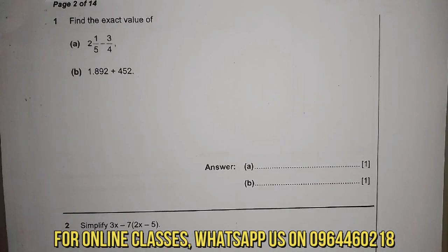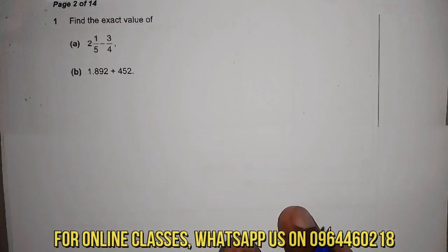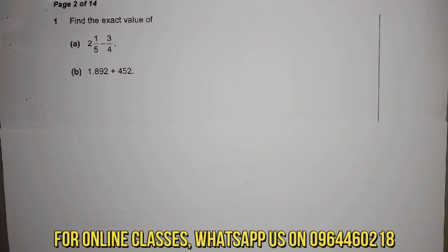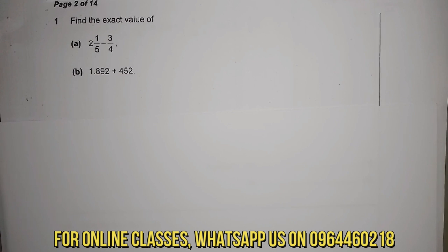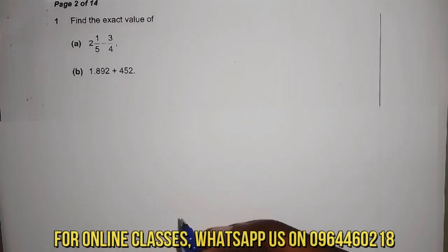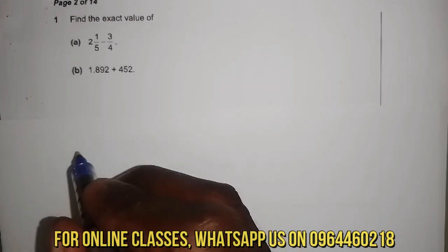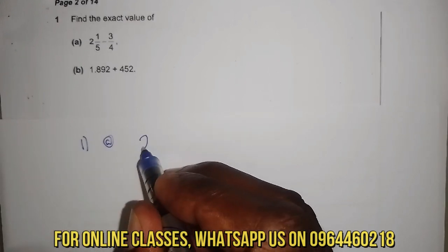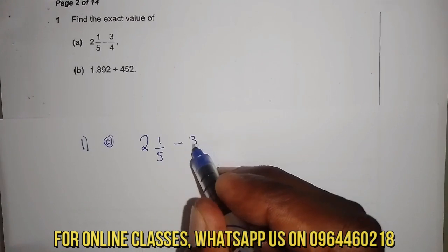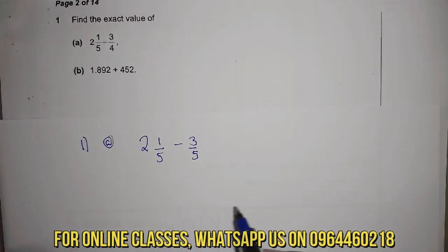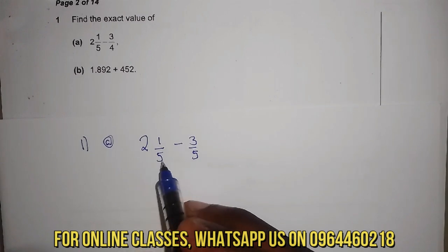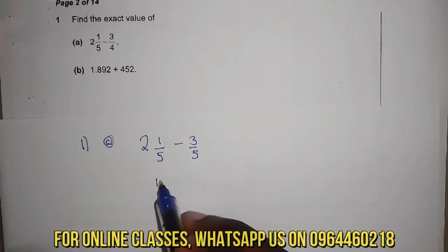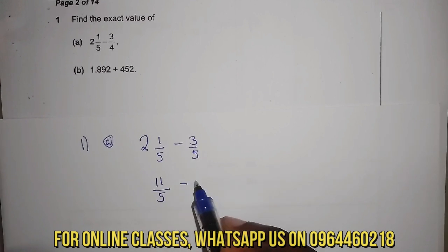Now you can see what we have on question one. It says find the value of A: two whole number one over five minus three over four. The way we solve this is we have number one, so this is a two whole number, and we convert it — multiply two by five, you get ten, plus one, you get eleven. So that is eleven over five minus three over four.